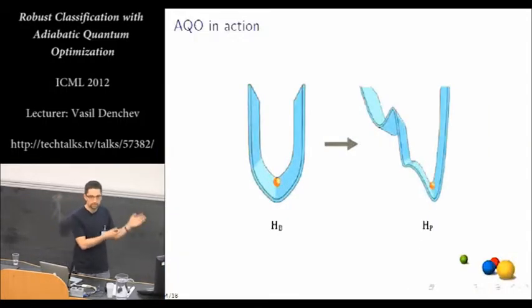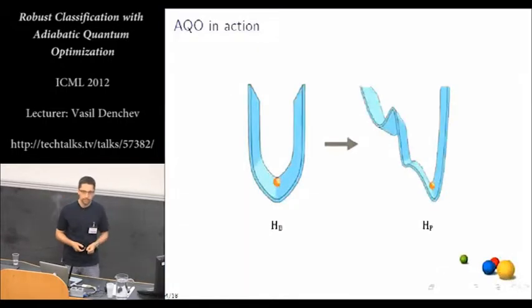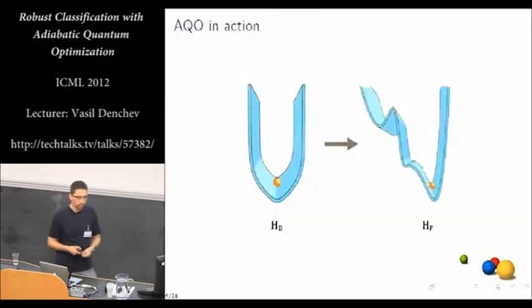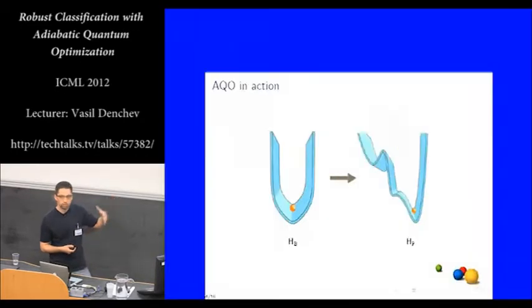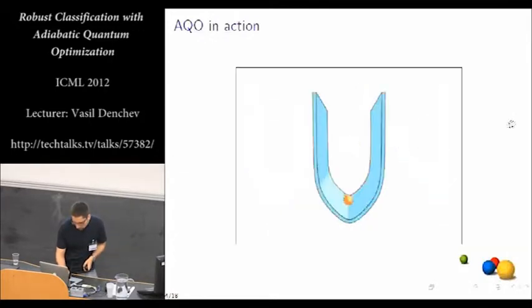So there is a theorem from physics called the adiabatic theorem that says that if we do this process slowly enough from beginning Hamiltonian to problem Hamiltonian, and we have started the system into the ground state of the beginning Hamiltonian, then at the end, we're going to have stayed in the ground state of the system. So we're going to be in the ground state of the problem Hamiltonian, which is the solution to our optimization problem also. And then we just need to read out the state of the system, and we have the solution to the problem that we're solving.